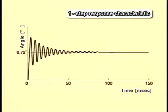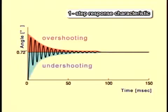The portion going forward past 0.72 degrees is called an overshooting, and the one coming backward past it is called an undershooting. These overshootings and undershootings are the causes of the vibrations in the stepping motor.